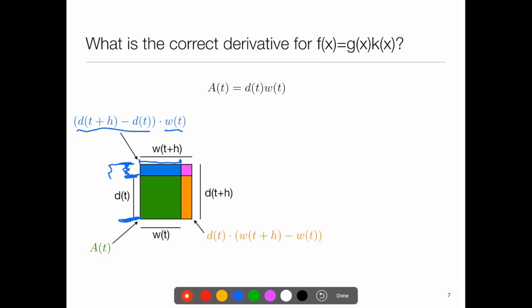Next, the orange rectangle. We have a similar product here. This time, d of t is this side here. The other side is w of t plus h, all the way across, minus w of t, leaving me just this little piece. So the area of the rectangle is d of t multiplied by w of t plus h minus w of t.